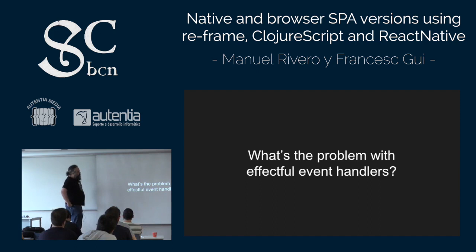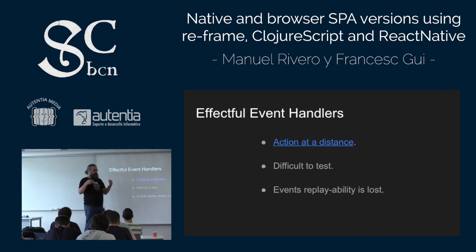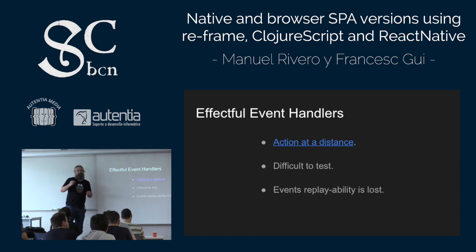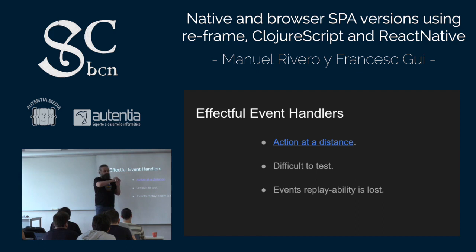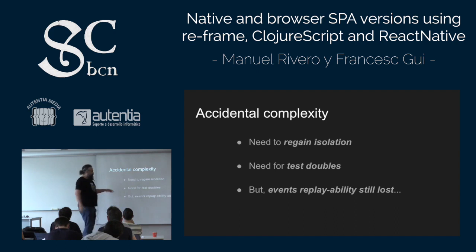What's the problem with effectful event handlers that are not pure? We lose local reasoning, it's action at a distance, code is more difficult to think about, and they are difficult to test. We have to introduce complexity just to recover testability. Event replayability is lost because it's not only the events that matter — we need more information we don't have. We end up introducing accidental complexity, using dependency injection and test doubles, and replayability still can't be fixed.